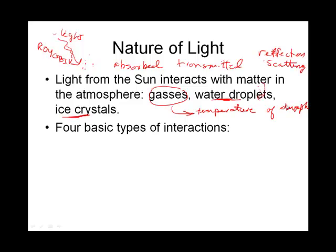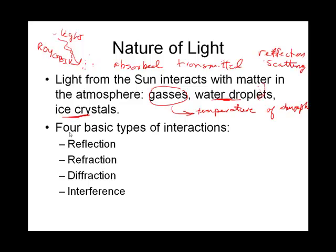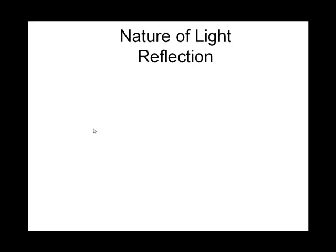So four basic things that can happen with incoming light as it interacts with the various temperatures of the atmosphere or liquid water droplets or ice crystals is that light can be reflected, that light can be refracted, that light can be diffracted, and that light, and something we call interference, can occur with that light, depending upon the particle it's interacting with, or the gas it's interacting with. So we're going to take a look at each one of these, starting with reflection.